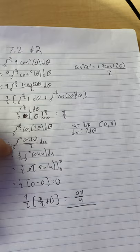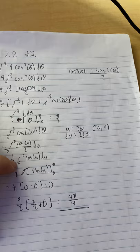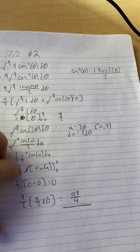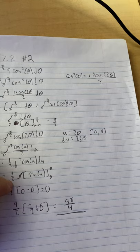We took out the 2, so it would be 1 half integral from 0 to pi of cosine u du. From there we solved the integral. We integrated cosine u to get sine u. Sine pi is 0 minus sine 0 is 0.